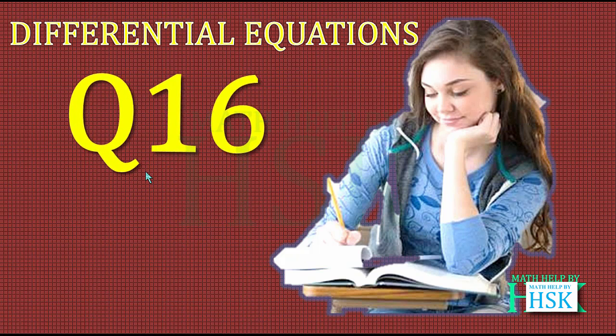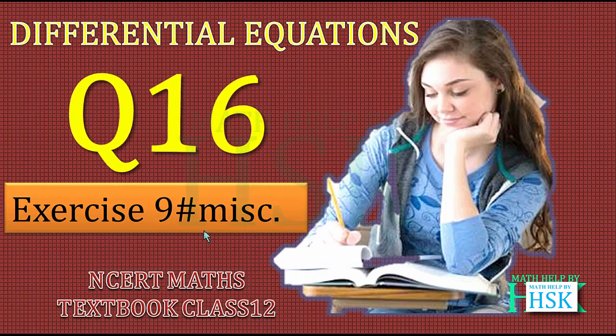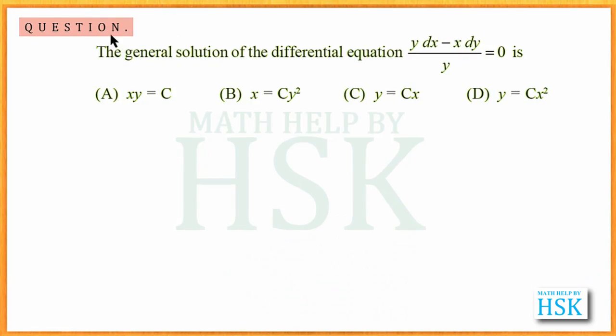Hello friends, taking question number 16 of the miscellaneous exercise of chapter 9. The question is: the general solution of the differential equation (y dx minus x dy) upon y equals 0 is which of the given option. This is an objective type question and we have to tell which option would be the correct option.